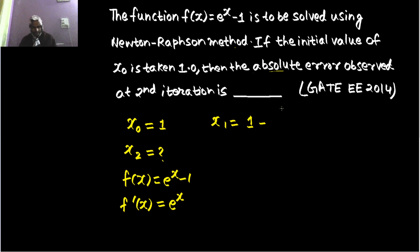So that value is 1.718282. Obviously the derivative is 1 more than that. So that will be 2.718282, which is the value of e itself. So x1 you are getting is 1 minus 1.718282 divided by 2.718282.